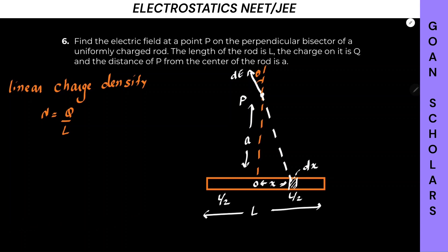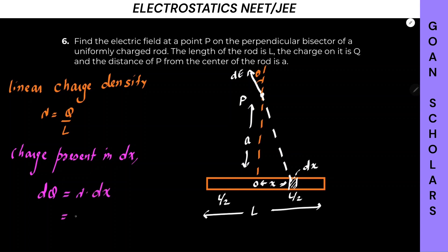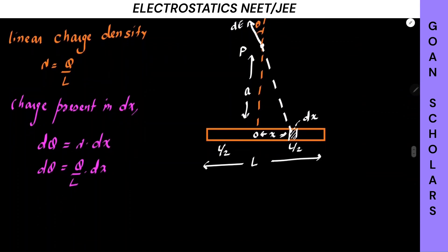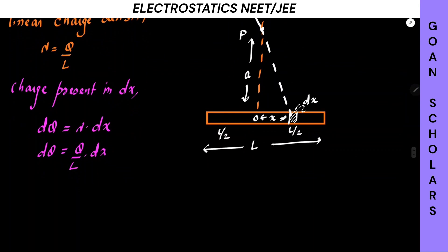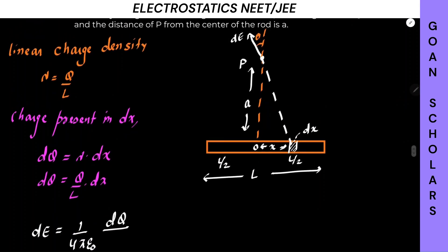Since lambda is constant, the charge present in element dx will be dq, which equals lambda times dx, which is Q/L times dx. The electric field due to this small charge dq at distance SP is dE, which equals (1/4πε₀) times dq divided by SP squared. Let's call the point on the rod S, so the distance is SP.